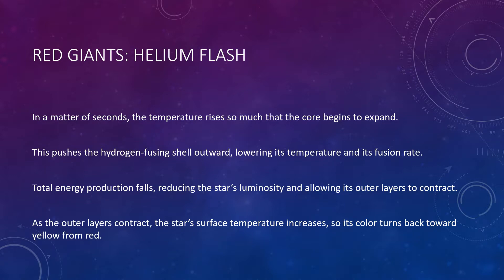Because degeneracy pressure does not increase with temperature, the onset of helium fusion heats the core rapidly without causing it to expand. Instead, the temperature and helium fusion rate spike drastically in what is called a helium flash, releasing an enormous amount of energy into the core. In a matter of seconds, the temperature rises so much that the thermal pressure soon surpasses degeneracy pressure and pushes back against gravity, causing the core to expand. This core expansion pushes the hydrogen-fusing shell outward, lowering its temperature and its fusion rate. The result is that even though helium-core fusion and hydrogen-shell fusion are now taking place simultaneously in the star, total energy production falls from its peak during the red giant stage, reducing the star's luminosity and allowing its outer layers to contract somewhat. As the outer layers contract, the star's surface temperature increases, so its color turns back toward yellow from red.